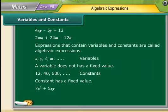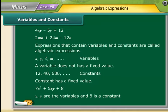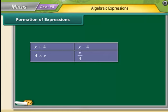So in an equation 7x² + 5xy + 8, X and Y are the variables and 8 is a constant. Algebraic expressions are formed by combining variables and constants with the help of addition, subtraction, multiplication, and division.